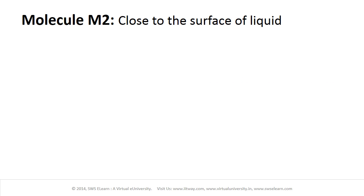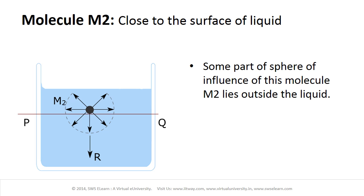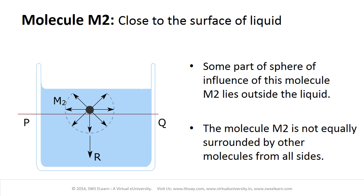Now consider the second situation of molecule M2. Some part of the sphere of influence of this molecule M2 lies outside the liquid. In such a situation, the molecule M2 is not equally surrounded by other molecules from all sides.